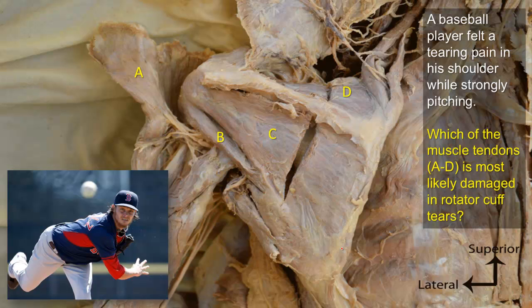A baseball player felt a tearing pain in his shoulder while strongly pitching. Which of the muscle tendons A to D is most likely damaged? Muscle A is the deltoid muscle, which has been dissected and reflected away from its proximal bony attachments. The other muscles are of the rotator cuff group: B is teres minor, C is infraspinatus, and D is supraspinatus.